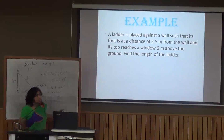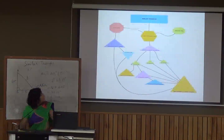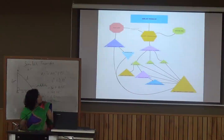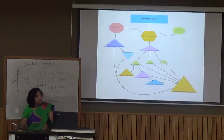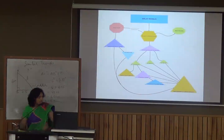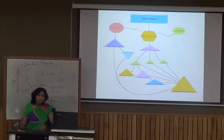Let's look at our concept summary for similar triangles. The key topics are: similarity of triangles, the Basic Proportionality Theorem, similarity criteria — SSS, SAS, and AA — the ratio of areas of similar triangles, Pythagoras' theorem, and the converse of Pythagoras' theorem. Thank you, students.